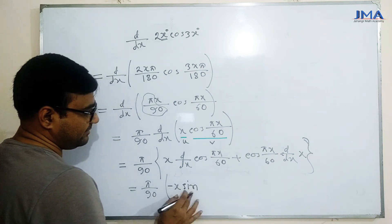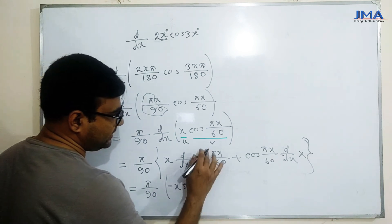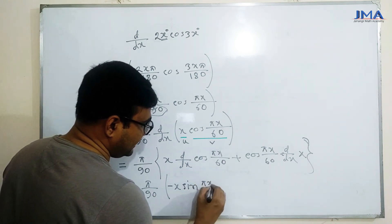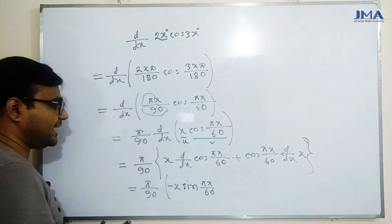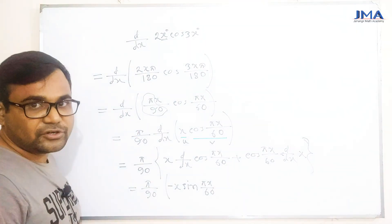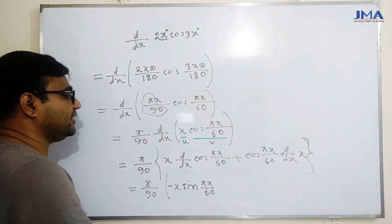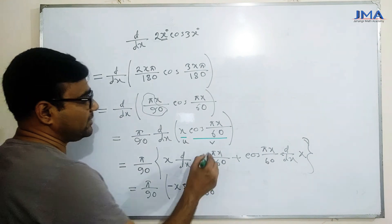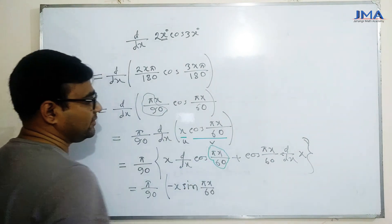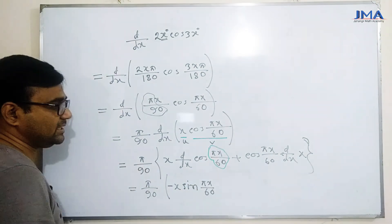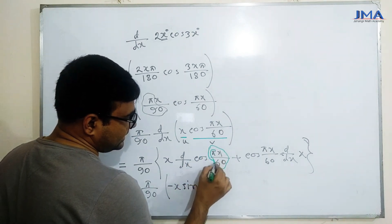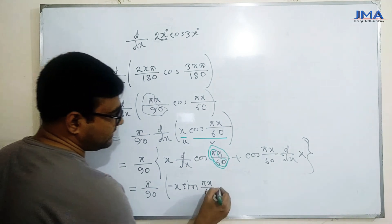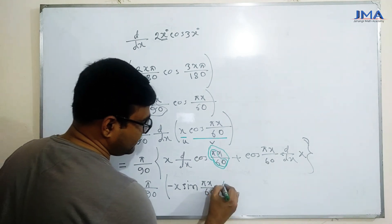minus sin(pi x by 60) — यहाँ pi x by 60 को यदि फिर से अंतरी करो तो result क्या होगा? फिर अंतरी करना होगा, कारण यह composite function है। देखो कौन सा constant है — वो constant होने के कारण बाहर आ जाएगा।